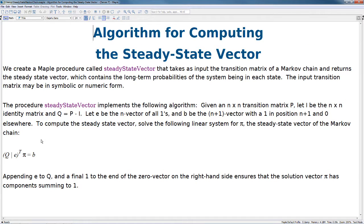The following describes the algorithm for computing the steady state vector. We'll start by creating a Maple procedure called steadyStateVector. This vector will take as input the transition matrix of a Markov chain and return the steady state vector, which contains the long-term probabilities of the system being in each state. The input transition matrix may be in symbolic or numeric form.